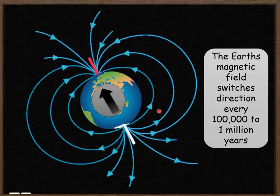In addition to that we need to realize that the Earth's magnetic field switches direction between every 100,000 to a million years.